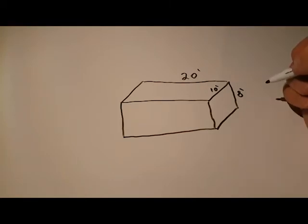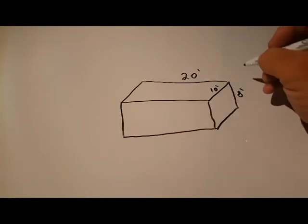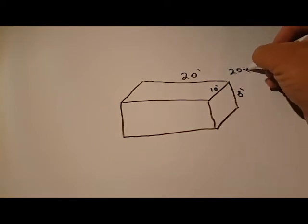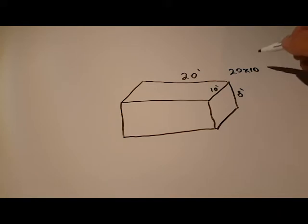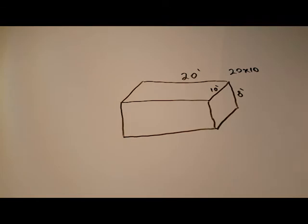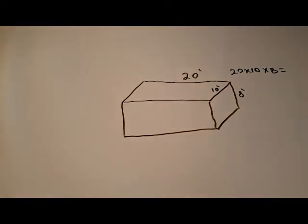Now, how are we going to do this? Well, the best way to do it is multiply your length by width, 20 times 10, and then you're going to multiply that number by your average depth. And this pool is a complete rectangle, so your average depth is 8 feet. You multiply that by 8, and then you'll get your total, which is 1600, and that will be in cubic feet.